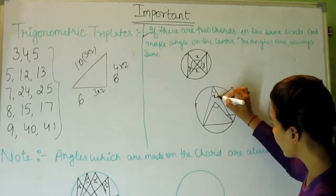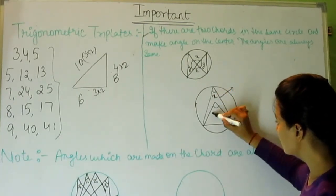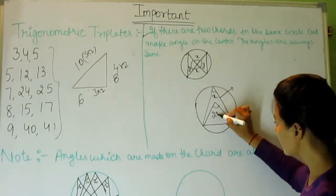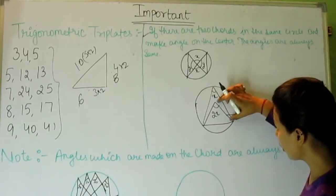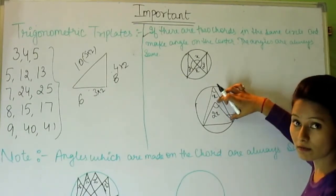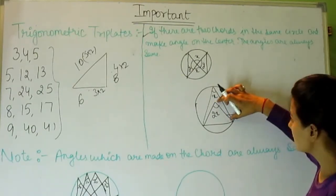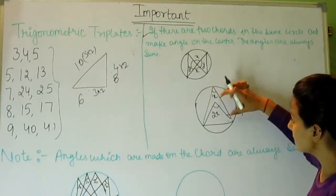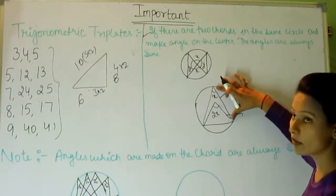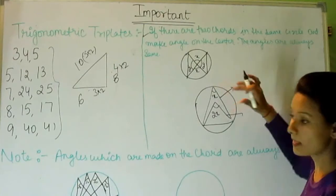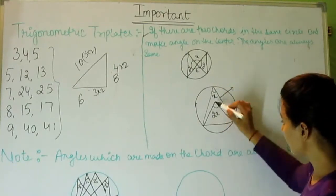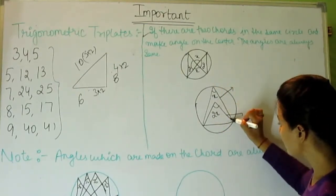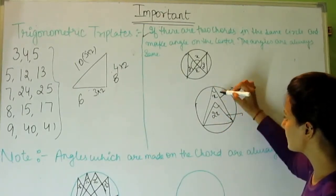If the angle at the circumference is x, then the angle at the center will be 2x. The angle at the center is always double the angle at the circumference made on the same chord.